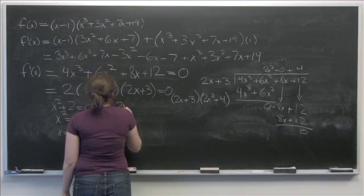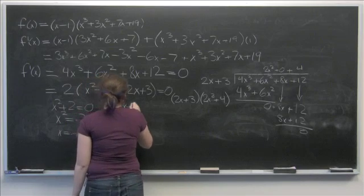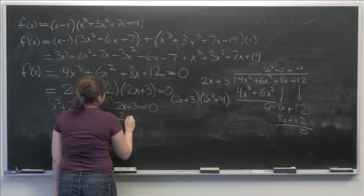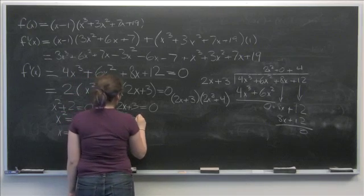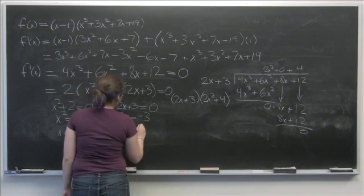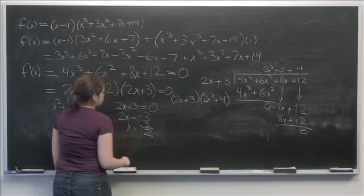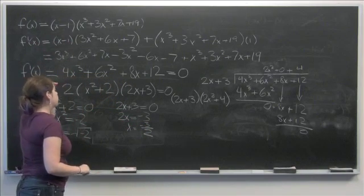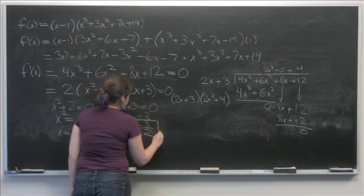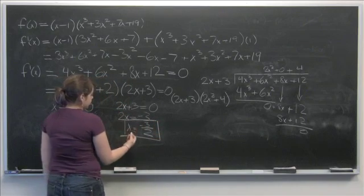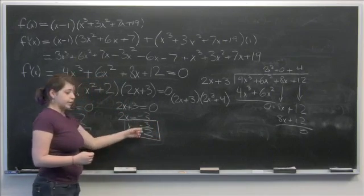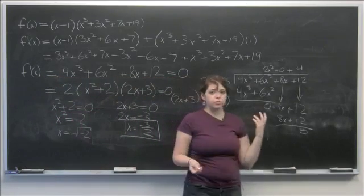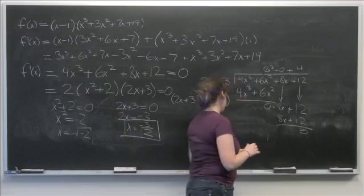Setting 2x + 3 = 0 gives 2x = -3, so x = -3/2. For our function, we have one critical point: x = -3/2.